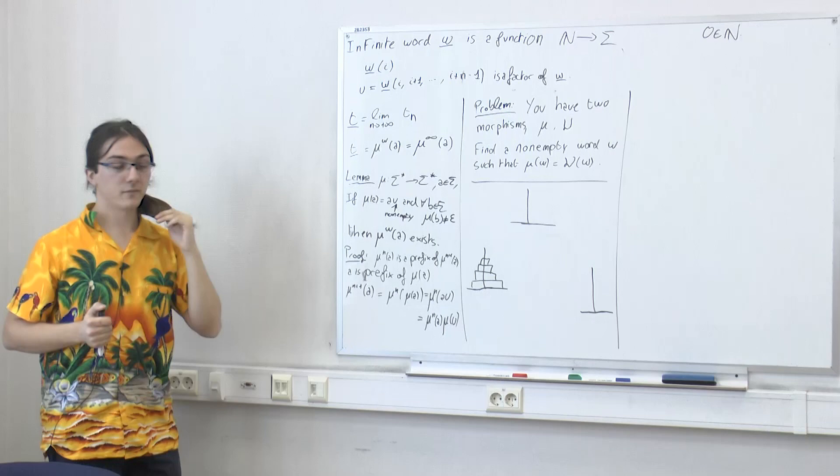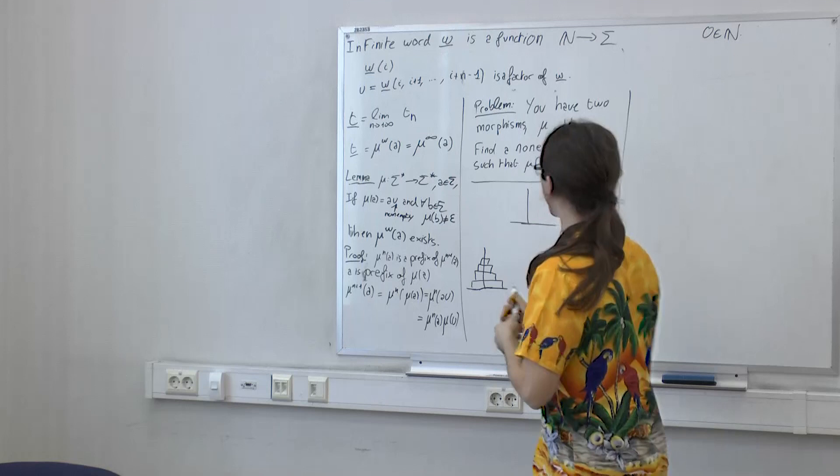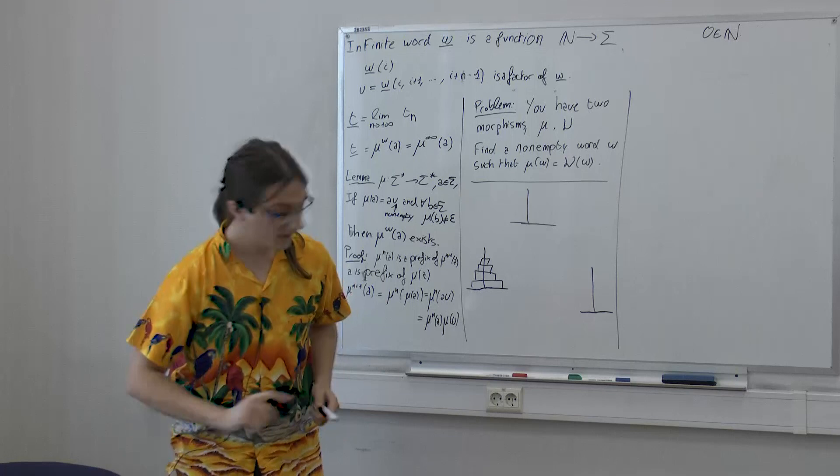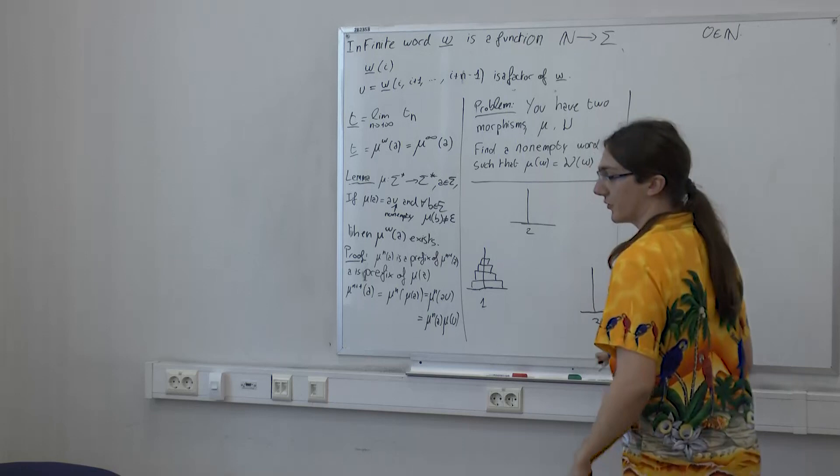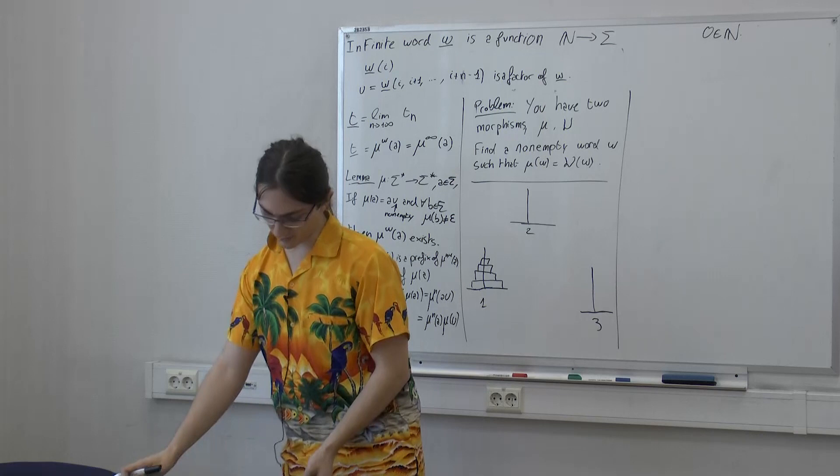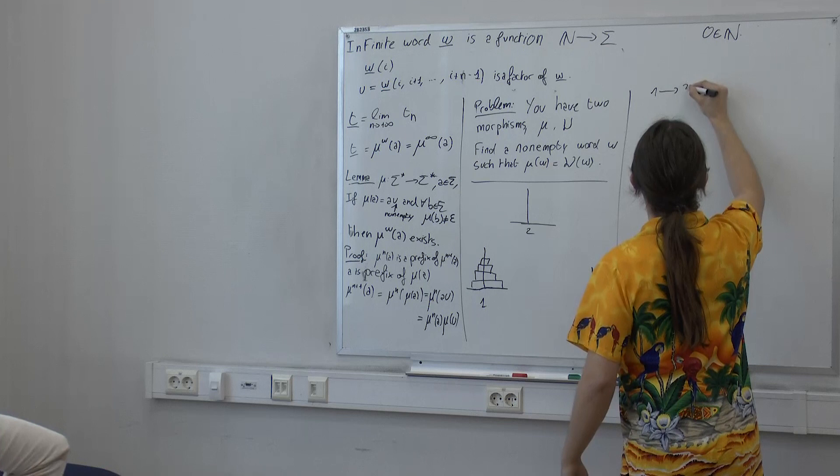It turns out this doesn't help in terms of complexity, because the size of the output is exponential. The length recurrence gives |h_{n+1}| = 2|h_n| + 1, so it's exponential. You need to write the output regardless, so any algorithm must take at least exponential time. Both algorithms match this bound — they take not much more than just printing the output.